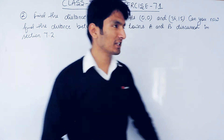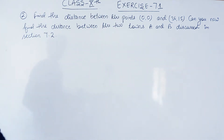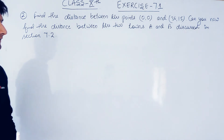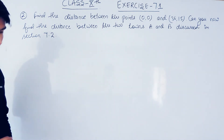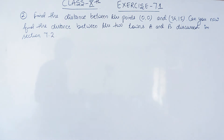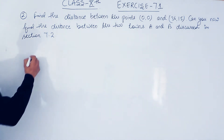Hello everyone. In this video we are going to solve question number 2 of Exercise 7.1. The question says: find the distance between the point (0,0) and (36,15). Can you now find the distance between the two towns A and B discussed in section 7.2?